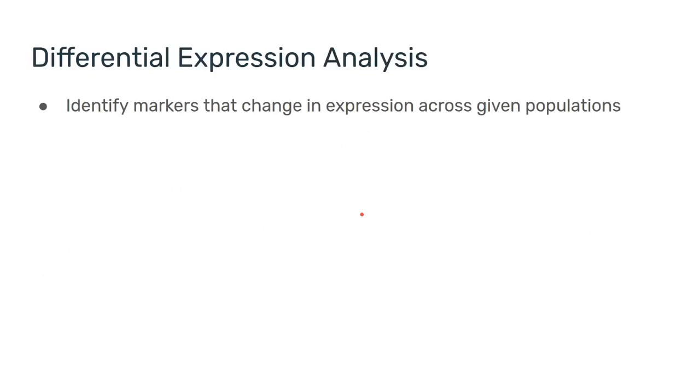On a basic level, differential expression analysis is to identify markers that change in expression across given populations. In other words, let's say we have our samples, and in this example let's split them to responders and non-responders, although the x-axis here could be any covariate of choice. The y-axis is going to be the different cell subsets—T-cells, B-cells, monocytes, and so on.